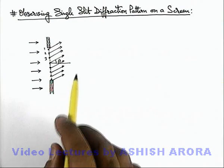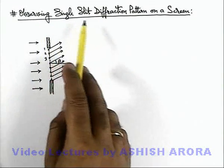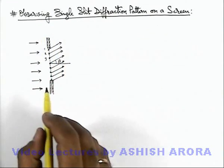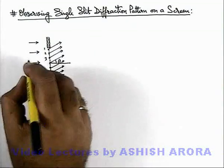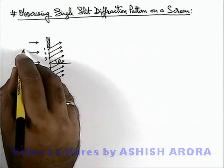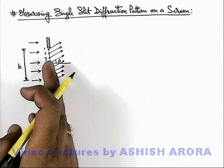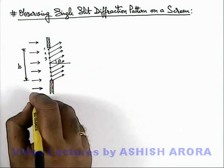Let us understand the experiment by which we can observe a single slit diffraction pattern on a screen. Again here in the picture you can see an enlarged view of a thin slit which is having a slit width b on which a parallel light is allowed to incident which is having an intensity i not.